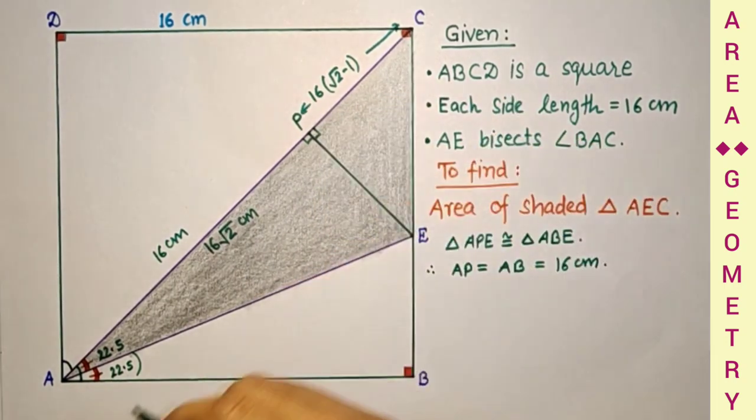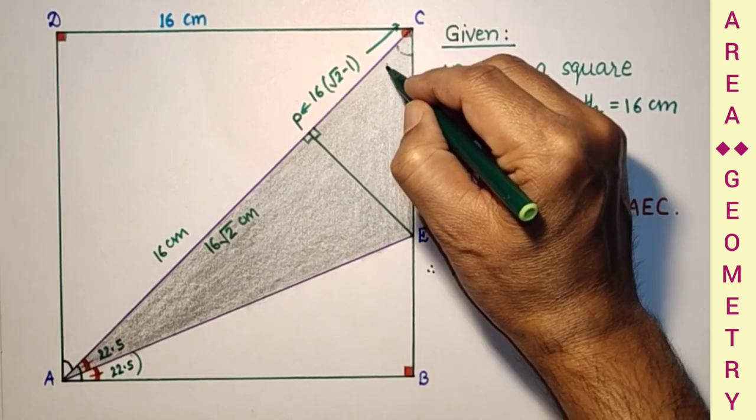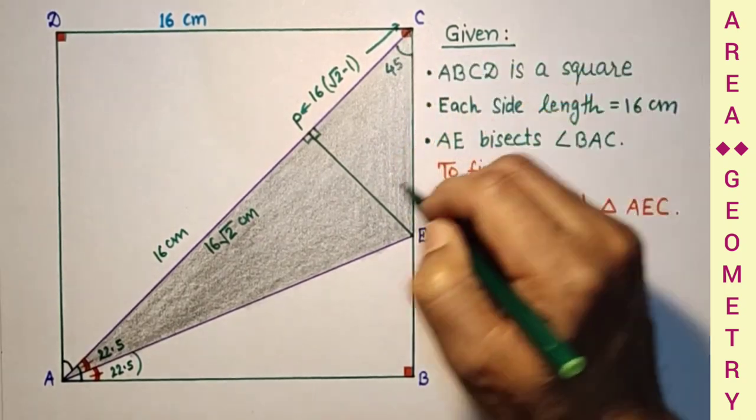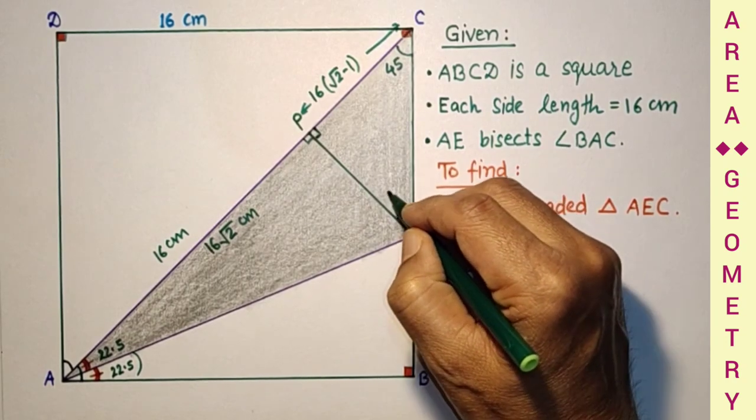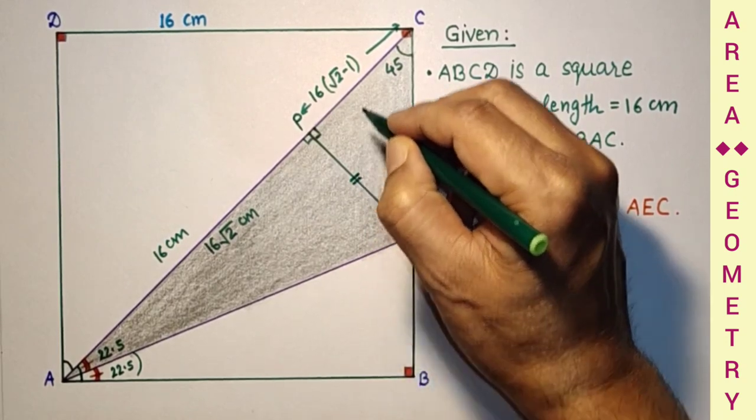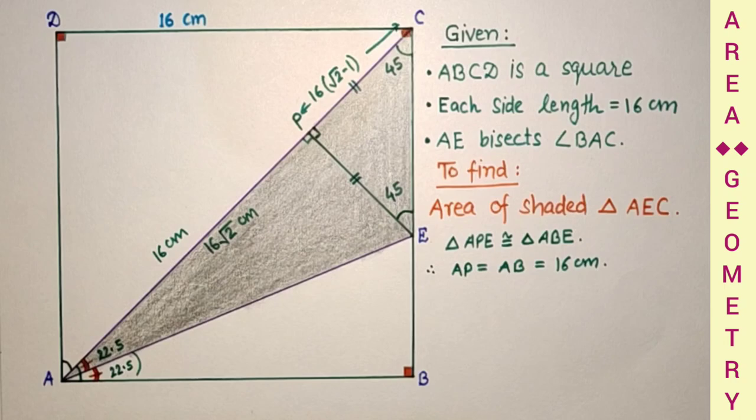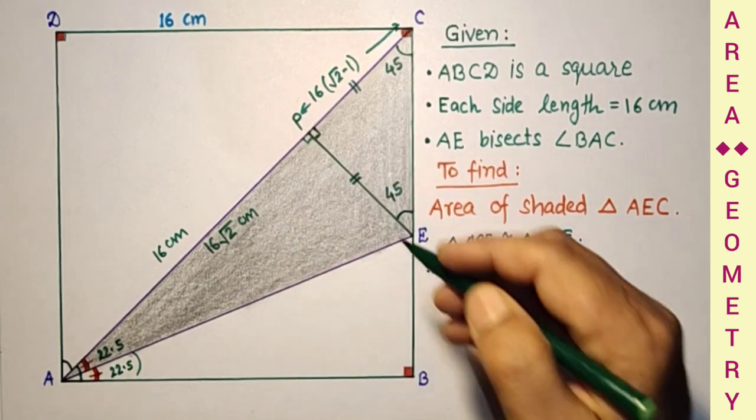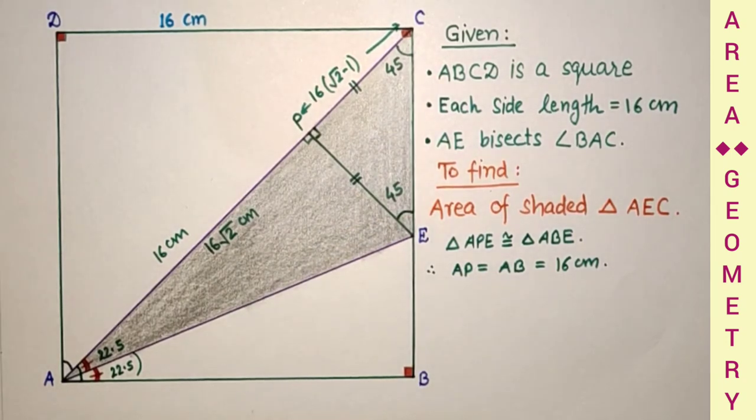Diagonal bisects the angle, so angle ACB is 45 degree. This is 45, and this is 90 degree. So therefore this third angle will be 45 also. Since these two angles are equal, these two sides will also be equal. Isosceles triangles equal sides. So this PE equals 16 bracket root 2 minus 1.